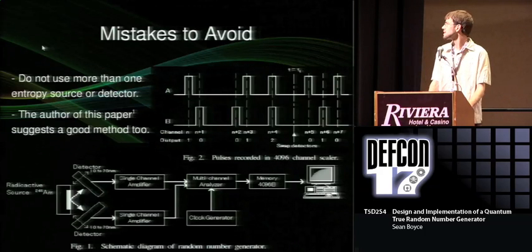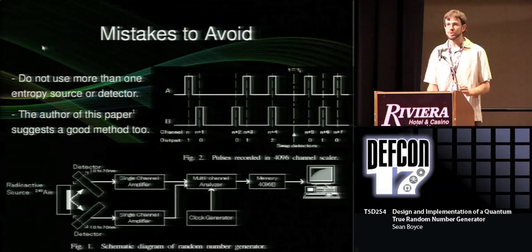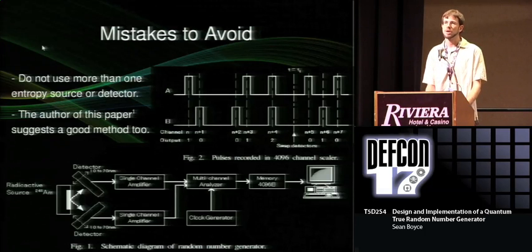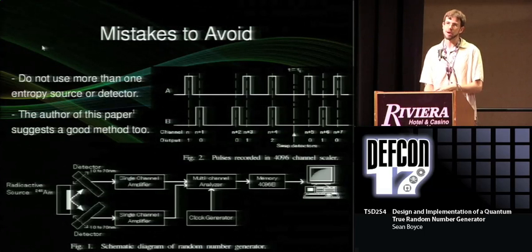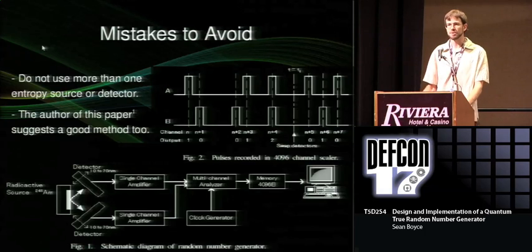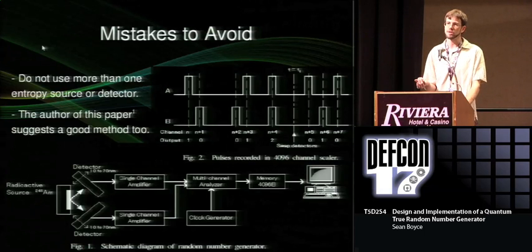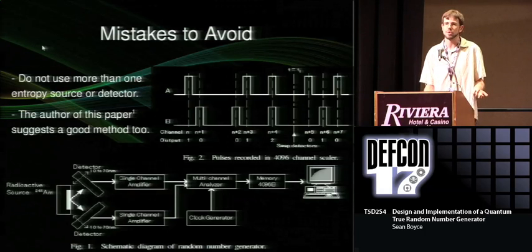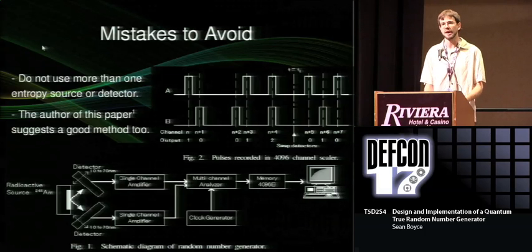The first most tempting mistake is to use more than one detector for your entropy source and have one detector output zeros and the other output ones. On paper this is nice, but in practice the detection efficiency of your detectors and where they are located relative to the source will make one of them more likely to detect things than the other. So you will have some sort of bias involved.